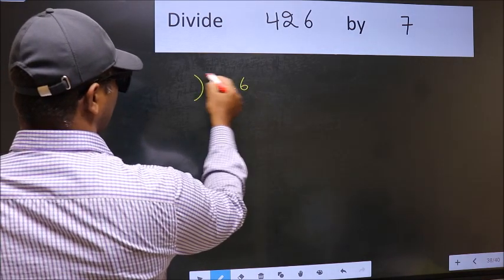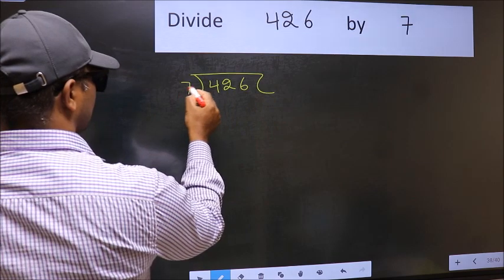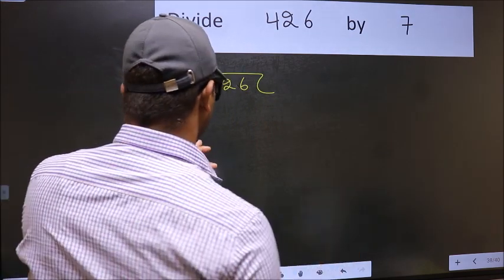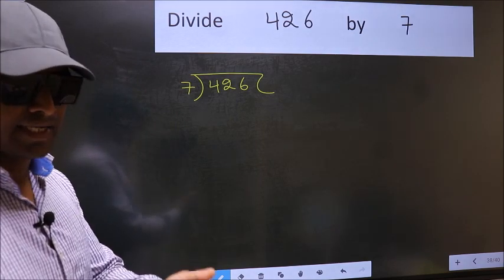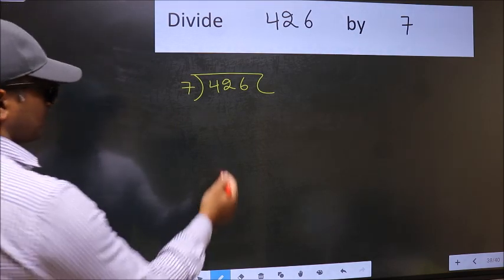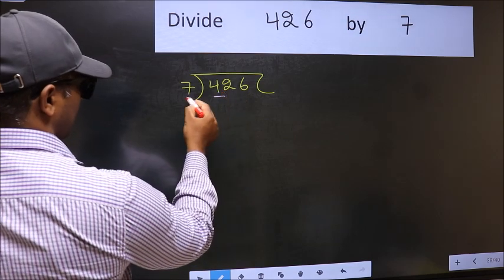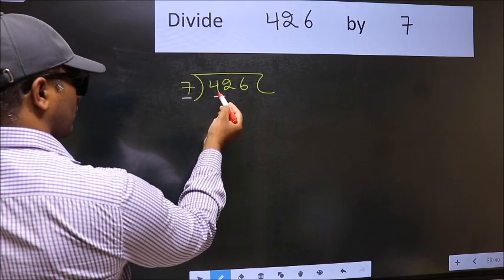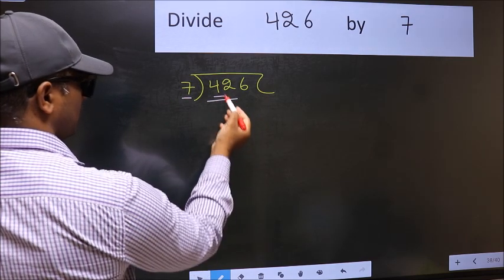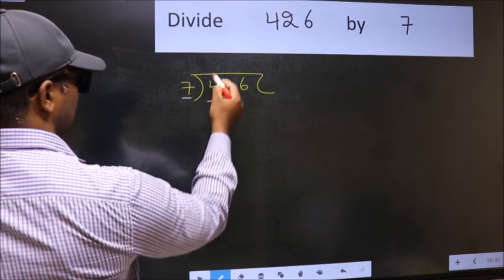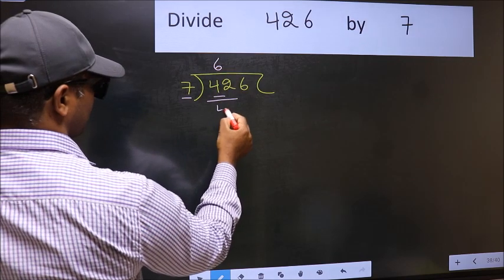426 and 7 here. This is your step 1. Next, here we have 4 and here 7. 4 is smaller than 7. So, we should take two numbers, 42. When do we get 42 in 7 table? 7 times 6, 42.